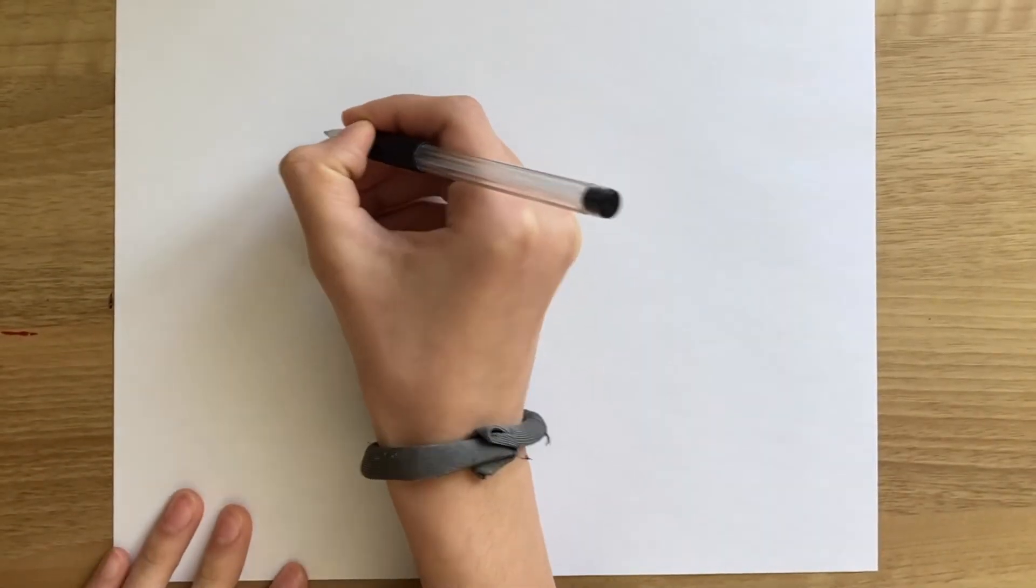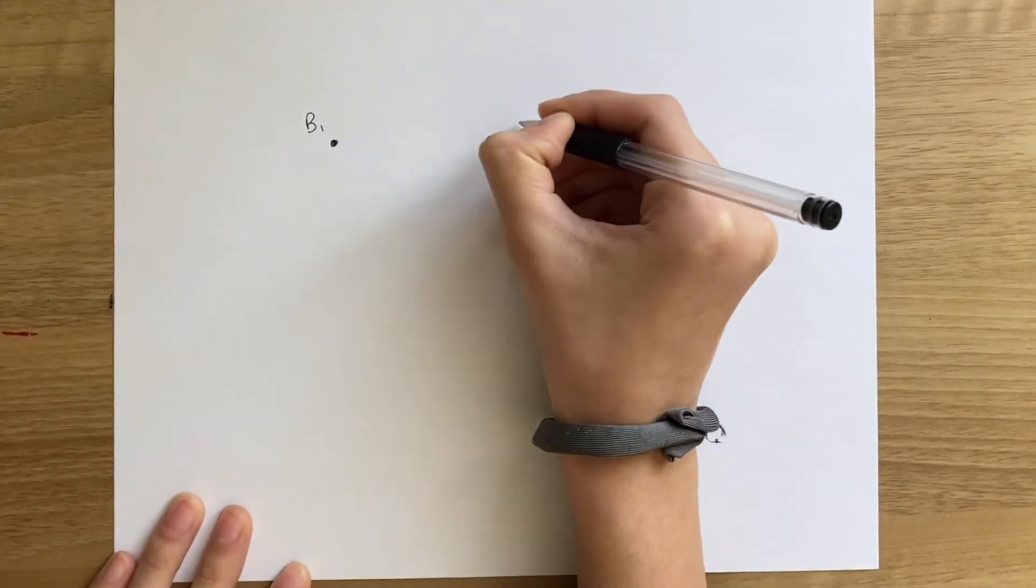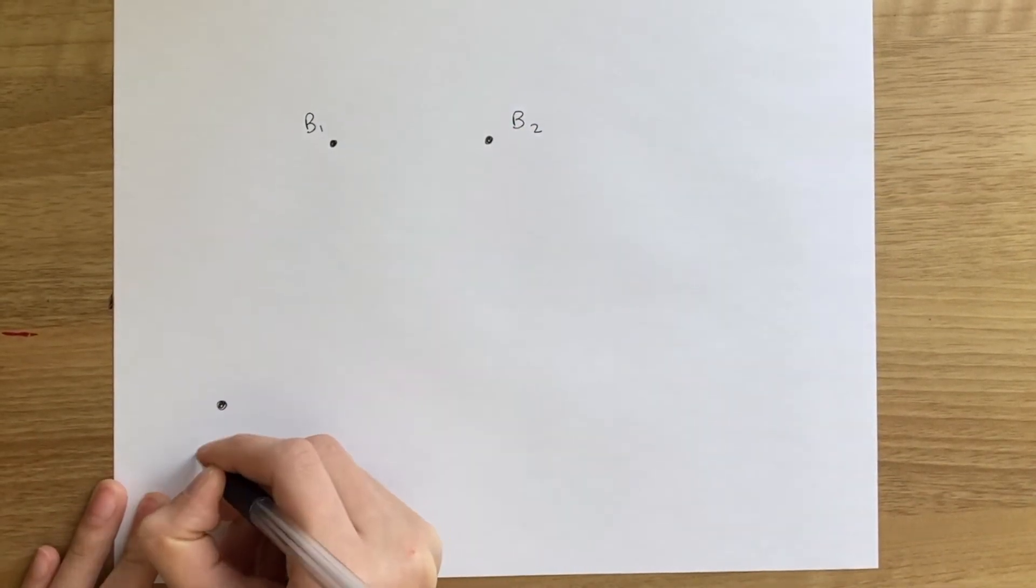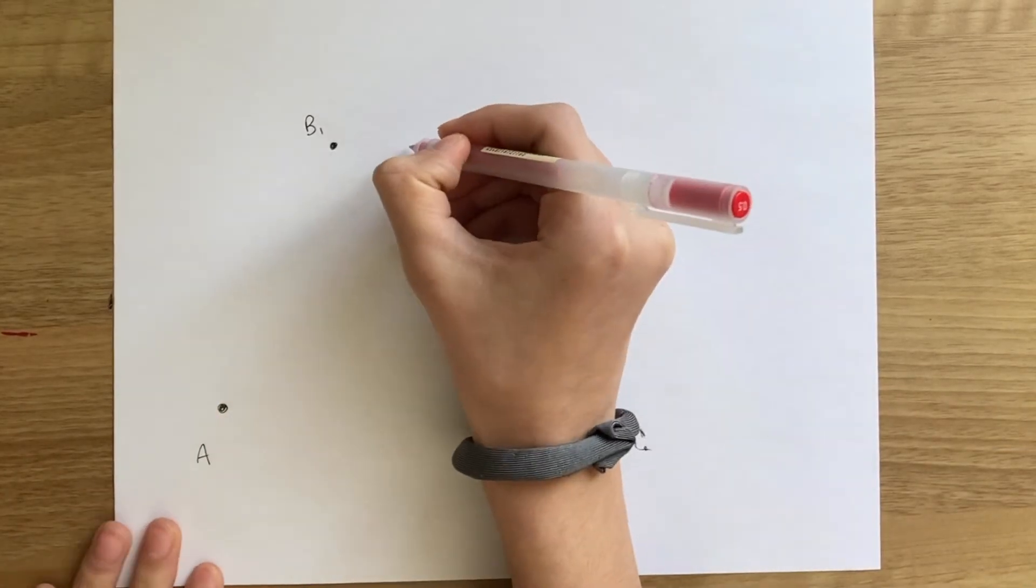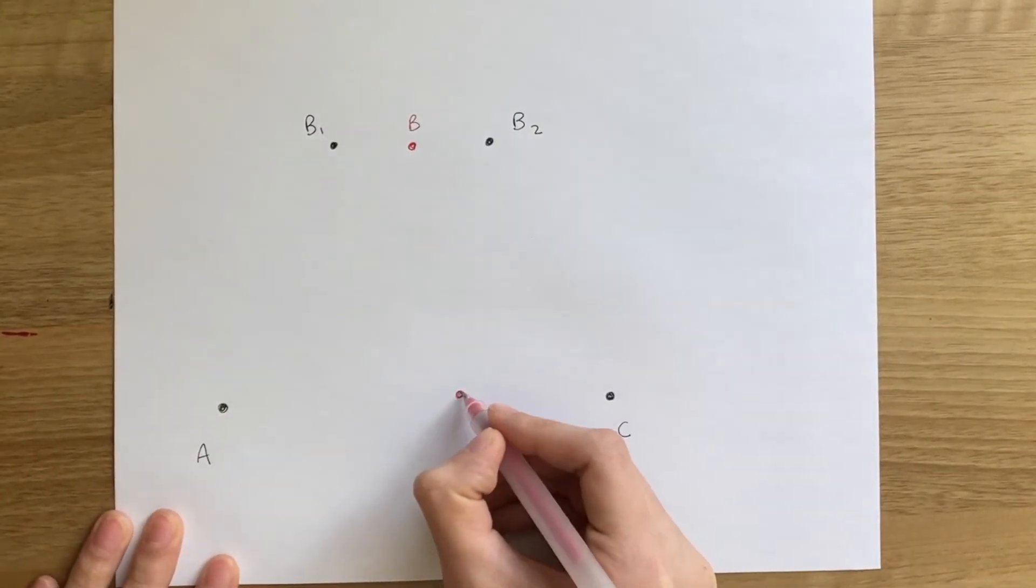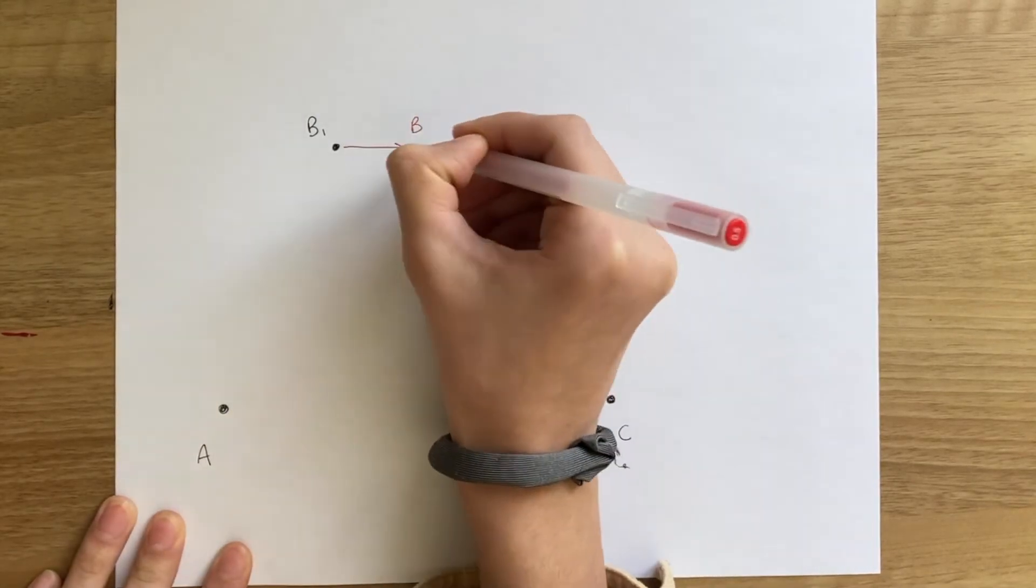What if we had four points, B1, B2, A, and C, and they each have some weights? Let's say B is the center of B1 and B2, and F is the center of A and C.